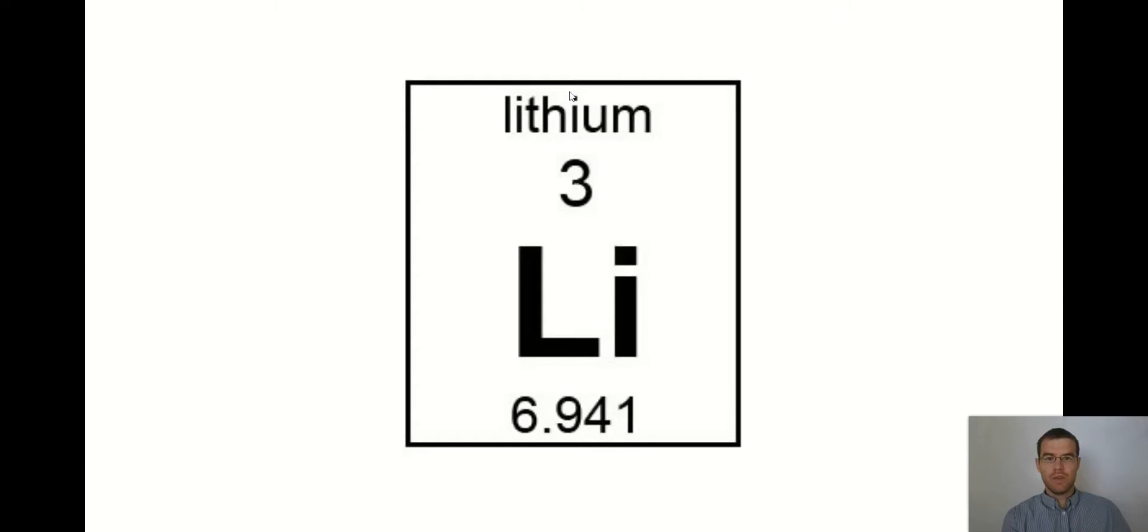Here's another way you might see things on the periodic table. You might see lithium on top there. You know this is the atomic number because it's smaller than the 6.9 and the symbol is in the middle.